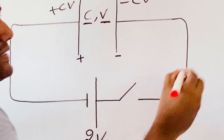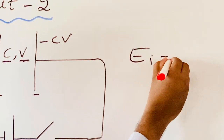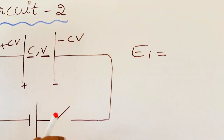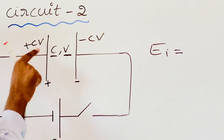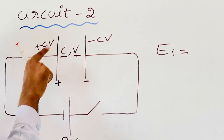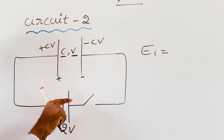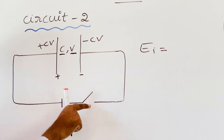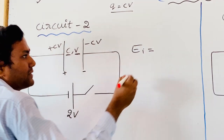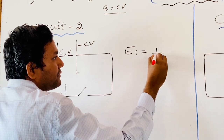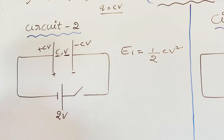What is the total energy stored between the plates of the capacitor before closing the switch? Before closing the switch, the charge on the plates of the capacitor gives us a total energy EI equal to half CV squared.